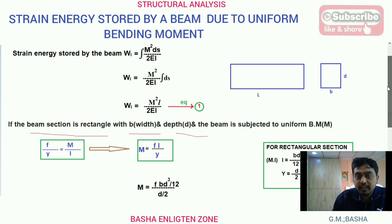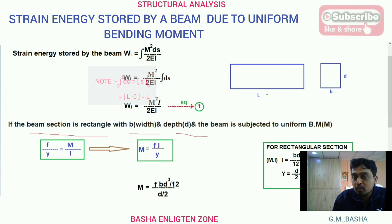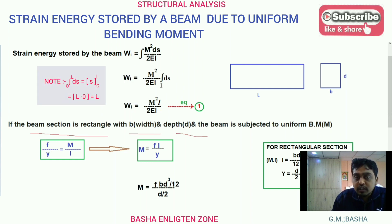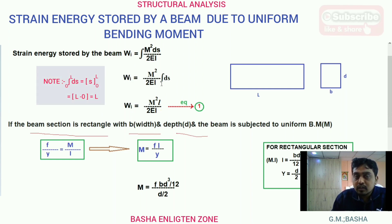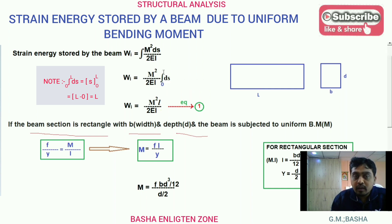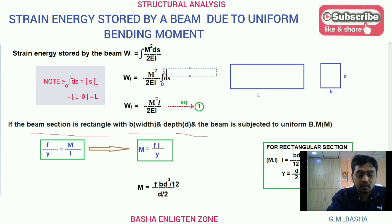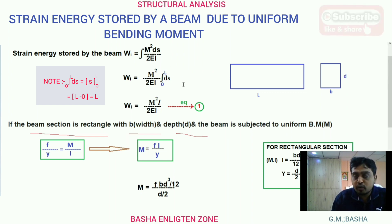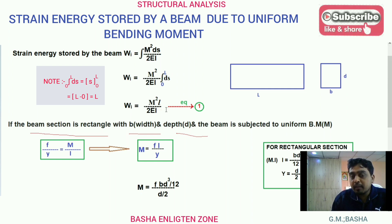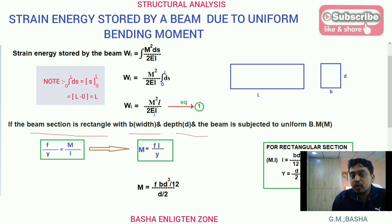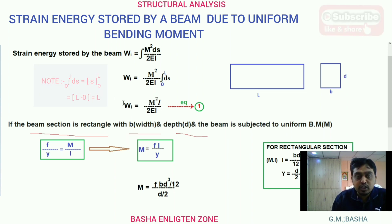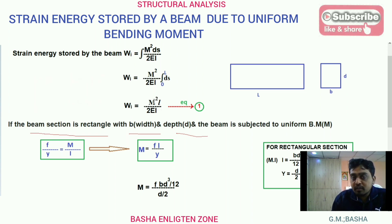The formula is Wi equal to M squared ds by 2EI. For the whole beam, integrating from 0 to L ds, after integration you get M squared L by 2EI — that is, upper minus lower limit gives M squared L by 2EI. So the energy stored by the particular length of the beam equals M squared L by 2EI.